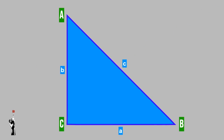We can also refer to a side using two capital letters, such as side AC, side AB, or side CB or BC — the order doesn't matter. It's very important to note that side small letter A is opposite angle A, small letter C is opposite angle C, and small letter B is opposite angle B.